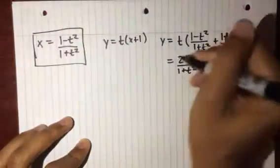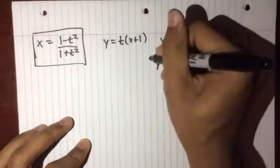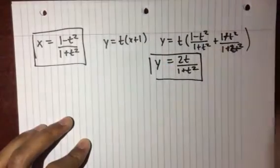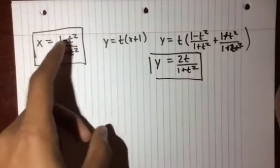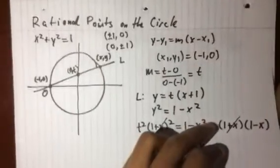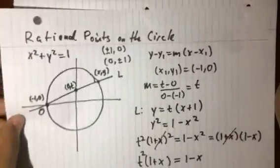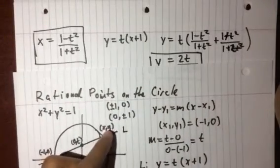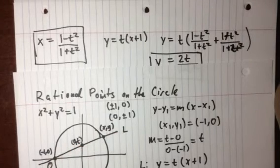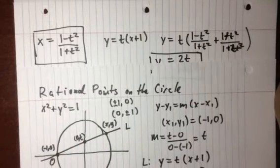So that's our parameterization for the circle. And you see that if we pick t to be rational then x and y are rational. So you can get all the rational points by just picking rational slopes t. And the same thing will work vice versa: if we have a rational point xy that forces t to be rational.